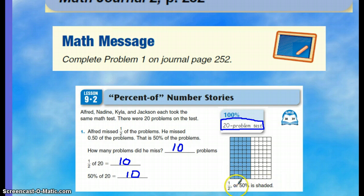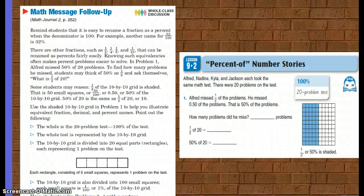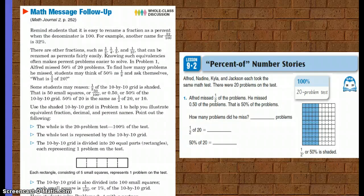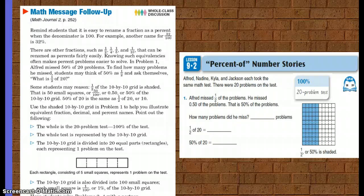So if you look at half or 50 percent is shaded. It's easy to rename a fraction as a percent when the denominator is 100. For example, another name for 32 hundredths is 32 percent.